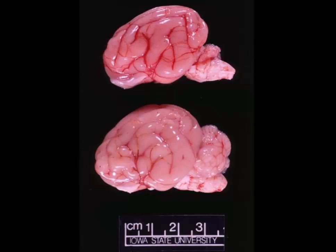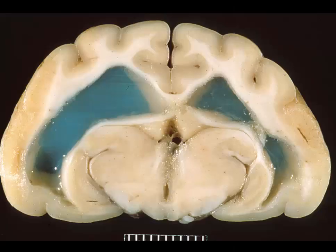Occasionally you'll see animals that are affected much earlier in gestation. During that window, the virus can affect the developing mitotically active cells which form the cerebrum — those are the ones clustered around the ventricles. When you knock those out, you get either severe hydrocephalus ex vacuo or you may even see very severe defects such as porencephaly and hydranencephaly.